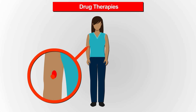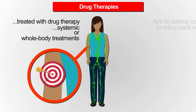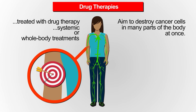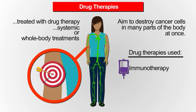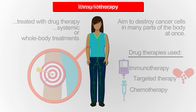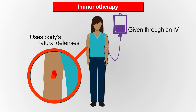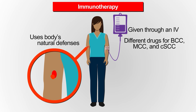Most advanced non-melanoma skin cancers will be treated with drug therapy — these are systemic, or whole-body, treatments that aim to destroy cancer cells in many parts of the body at once. Three approaches are used: immunotherapy, targeted therapy, and chemotherapy. Immunotherapy uses the body's natural defenses to find, attack, and kill cancer cells. These drugs are given through an IV in the vein. Immunotherapy is often used to treat advanced squamous cell and Merkel cell carcinomas, and may also be used to treat advanced basal cell carcinoma that does not respond to other treatments.